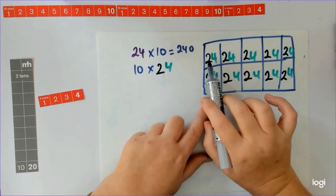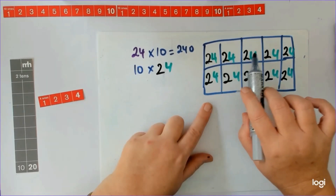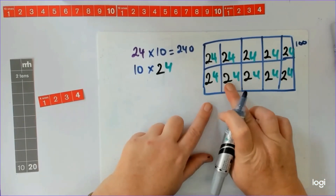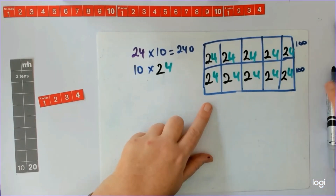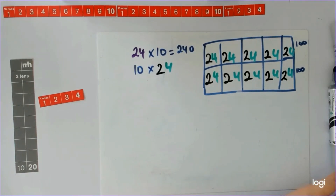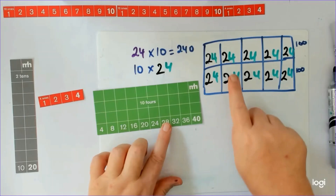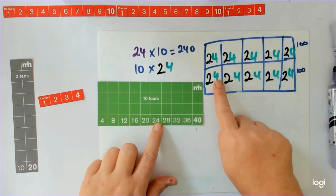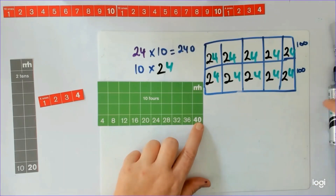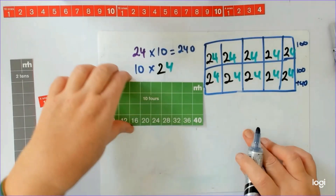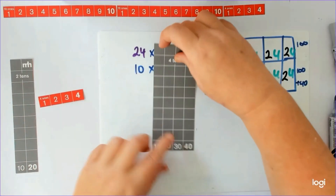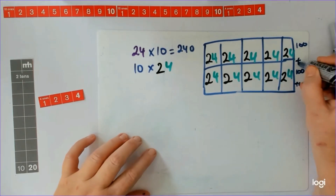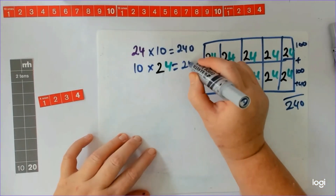So we worked out we could count: 20, 40, 60, 80, 100 — counting by 20s. Then with the fours I counted: 4, 8, 12, 16, 20, 24, 28, 32, 36, 40. So we had another 40 with all the fours. The flick between 10 fours is the same as 4 tens — that's what this is. Altogether we had 240.